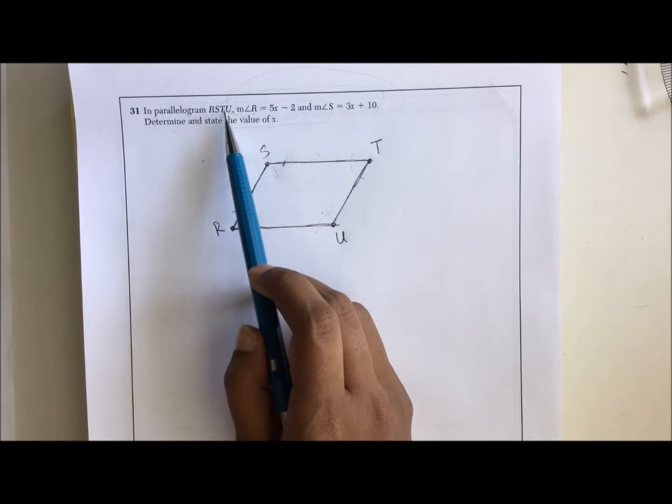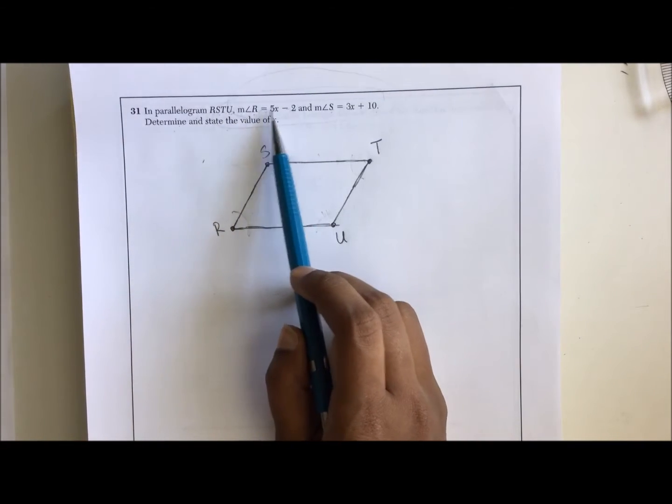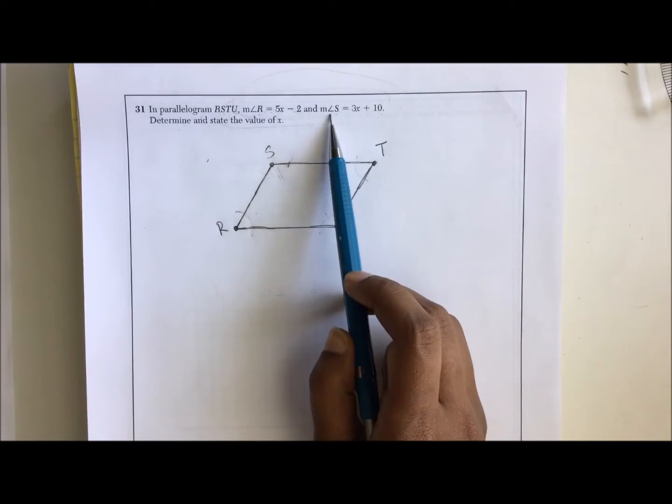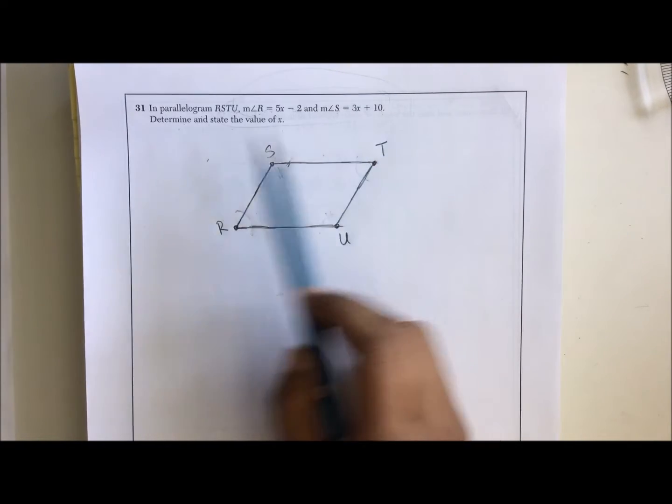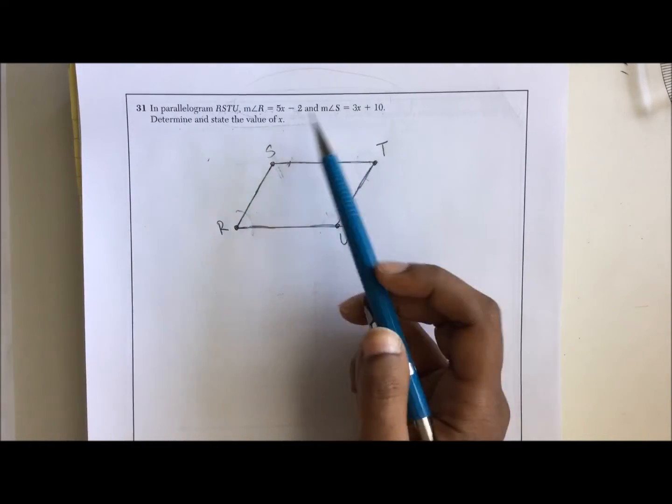In parallelogram RSTU, measure angle R equals 5x minus 2 and measure angle S equals 3x plus 10. Determine and state the value of x.